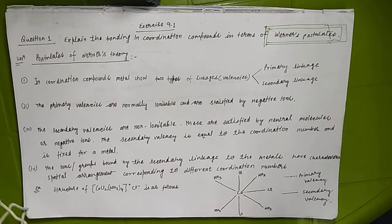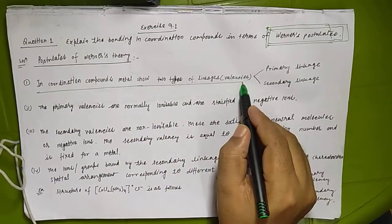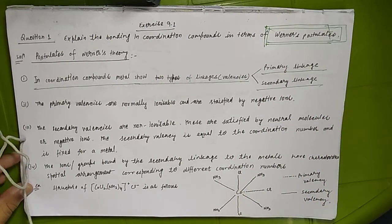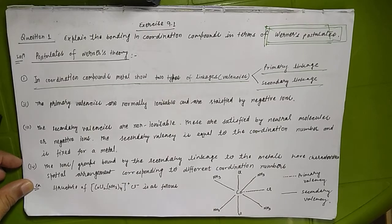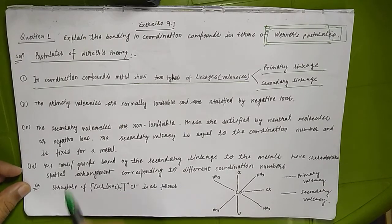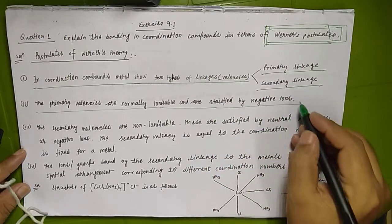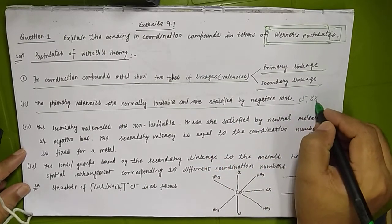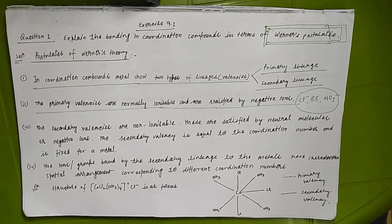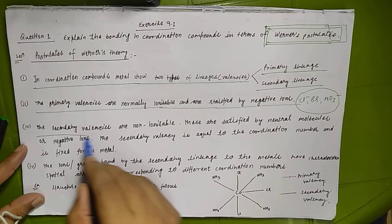In a coordination compound, the metal has two types of valency: primary valency and secondary valency. The primary valencies are normally ionizable and are satisfied by negative ions like Cl⁻, Br⁻, NO₃⁻, and so on. These negative ions satisfy the primary valency.